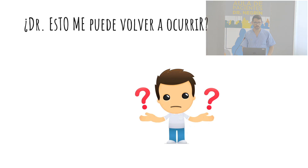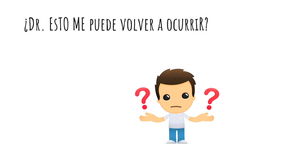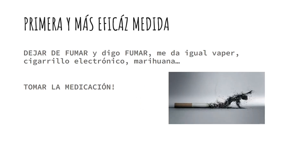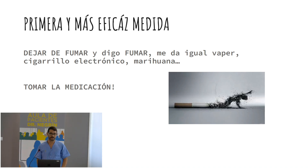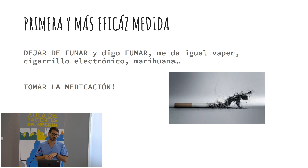Esto nos puede volver a ocurrir si nos ha pasado una vez. Las personas que ya han sufrido un evento tienen muchas más posibilidades de volver a repetir. La primera medida más eficaz es dejar de fumar, porque tiene un efecto protrombótico, hace que los stents se taponen, es proinflamatorio, hace que el colesterol malo suba y el bueno baje. Es malo para todo, menos para la colitis ulcerosa.